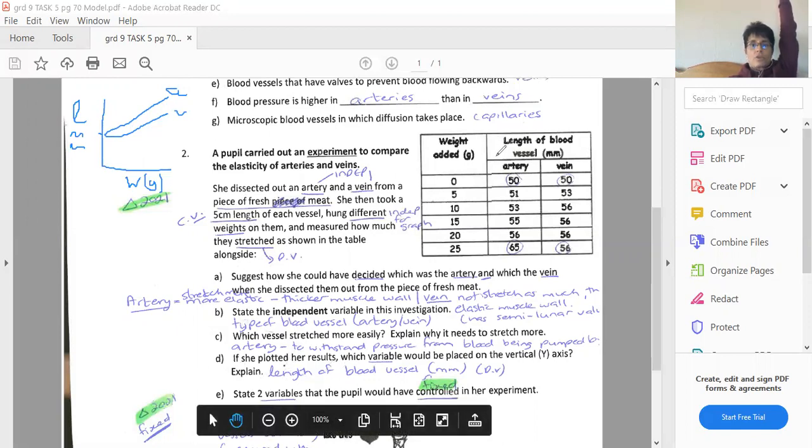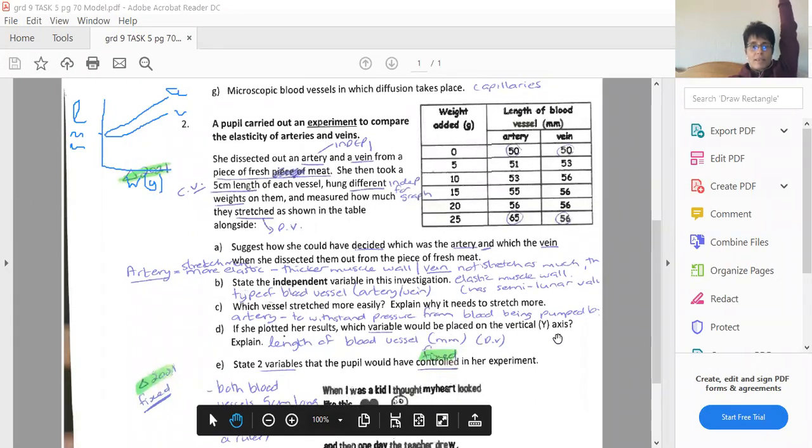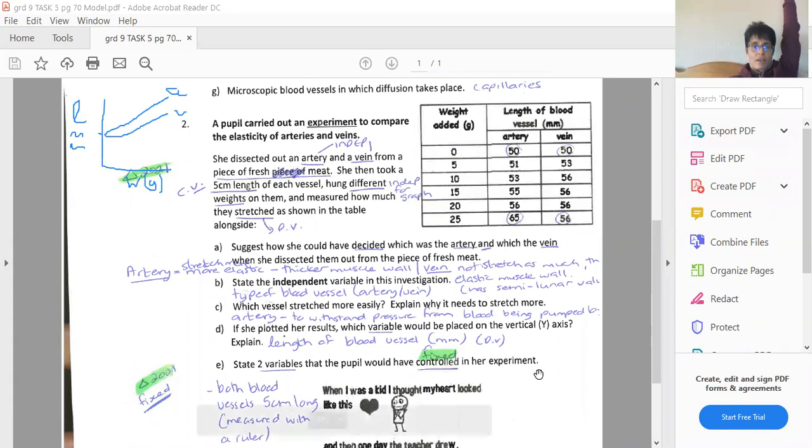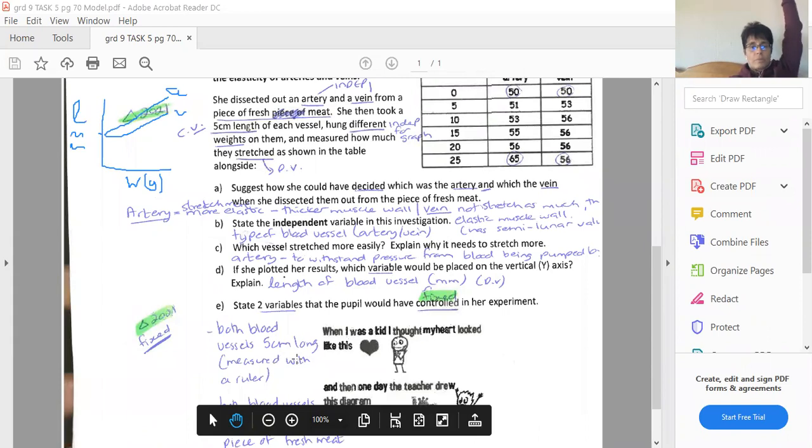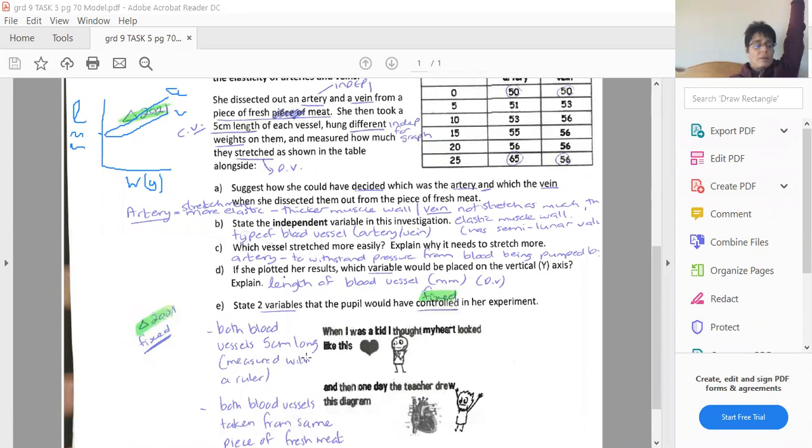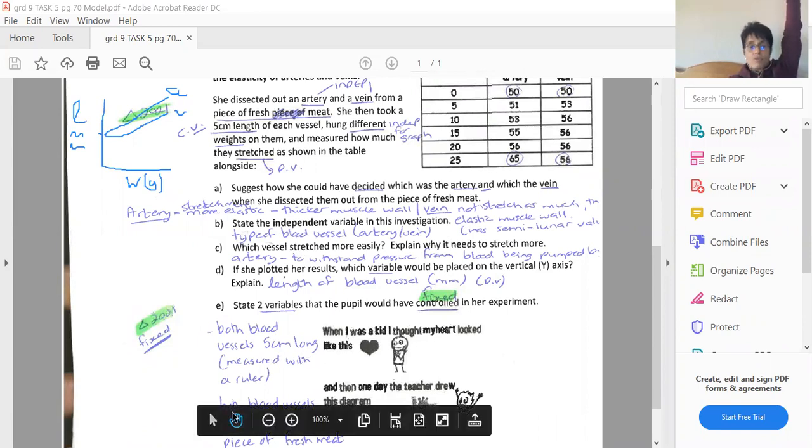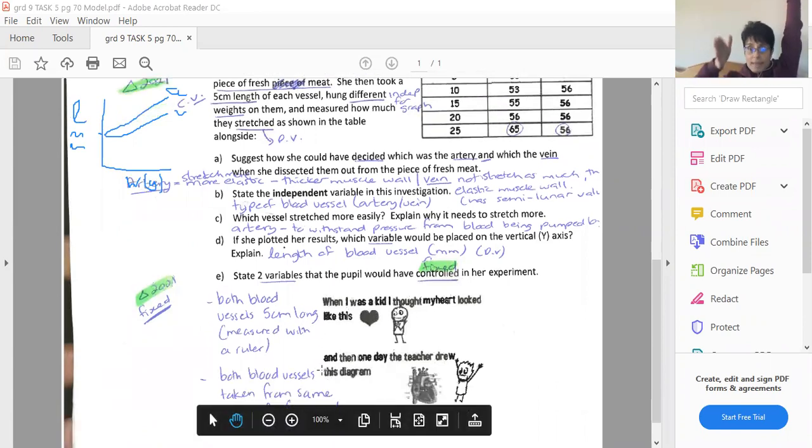If she plotted her results, which variable would be placed on the vertical or Y axis? It would be the length of the blood vessel, which gives an indication of how much they stretched. State two variables that the pupil would have controlled in the experiment or fixed, you know, fixed variables that would have been controlled. Well, both blood vessels started off with being five centimeters long or 50 millimeters. And how was it controlled? By measuring them accurately with a ruler and cutting into the same length.